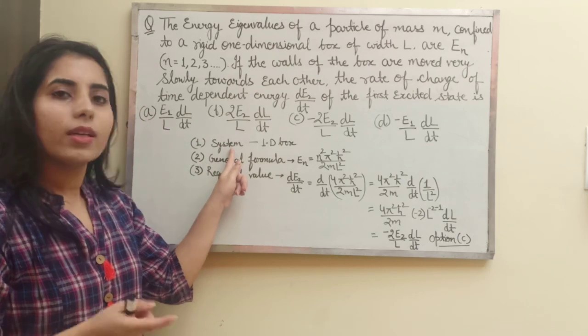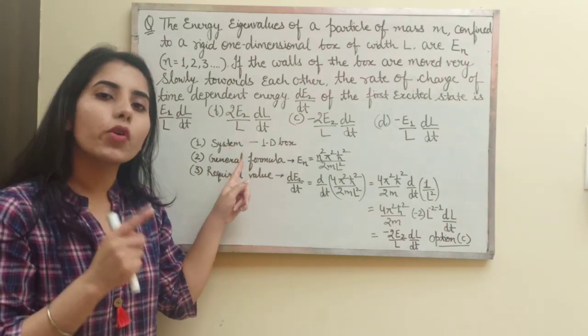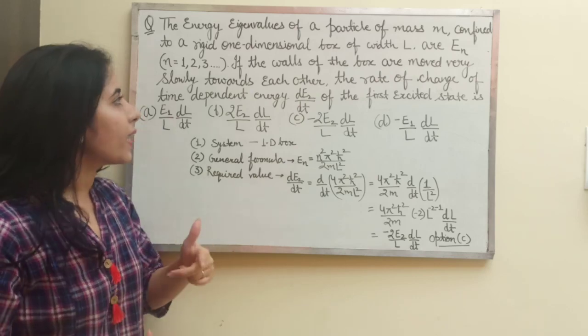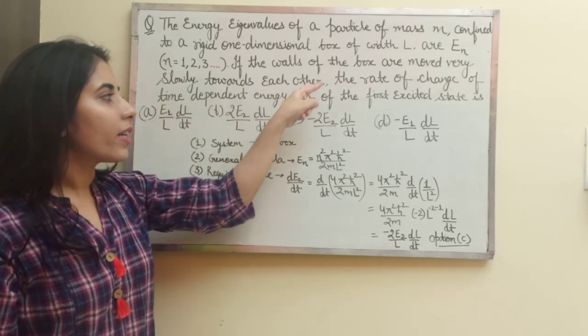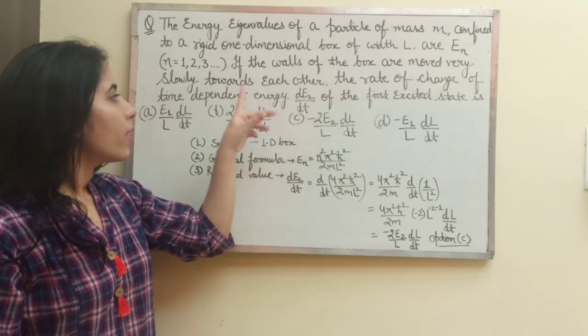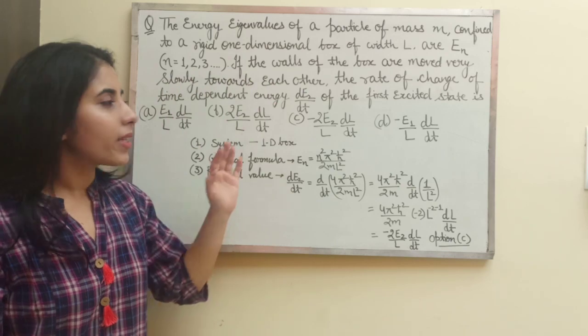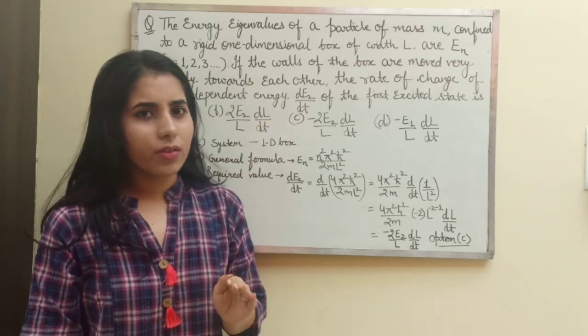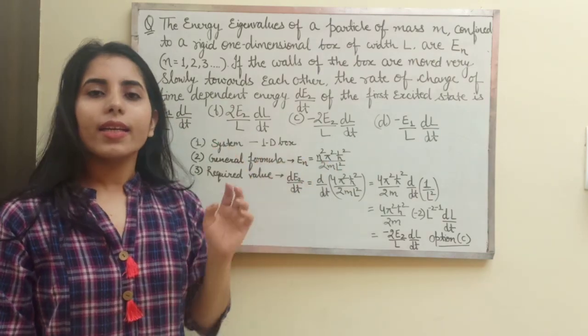First of all I have focused on the system in this question, that whether we know about it or not. When we know about it that's very good. Second thing, what we need to find - we need to find dE upon dt, that means the rate of change of time dependent energy. Do we know the general expression for energy? Because with the help of that only we will be able to relate it.